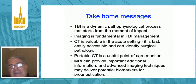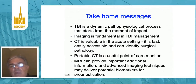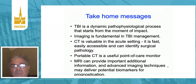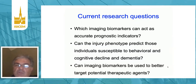Take-home messages: Traumatic brain injury is a dynamic pathophysiologic process that starts at the moment of impact and evolves over time. Imaging is fundamental in TBI management, not only for diagnostic decision making but to phenotype the patient and determine prognosis. The most important study in the acute phase is CT — it's quick, easy to do, and identifies surgical pathology rapidly. Having a portable CT scan is an excellent adjunct to any intensive care unit. MRI is used for later studies to deliver potential biomarkers for prognostication, particularly in patients with underlying diffuse axonal injury. Ongoing research questions include whether imaging biomarkers will serve as accurate prognostic indicators and whether we can better target therapeutic agents.